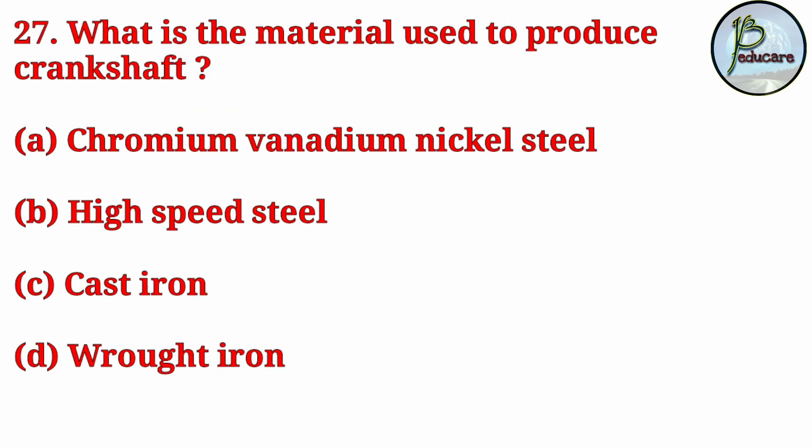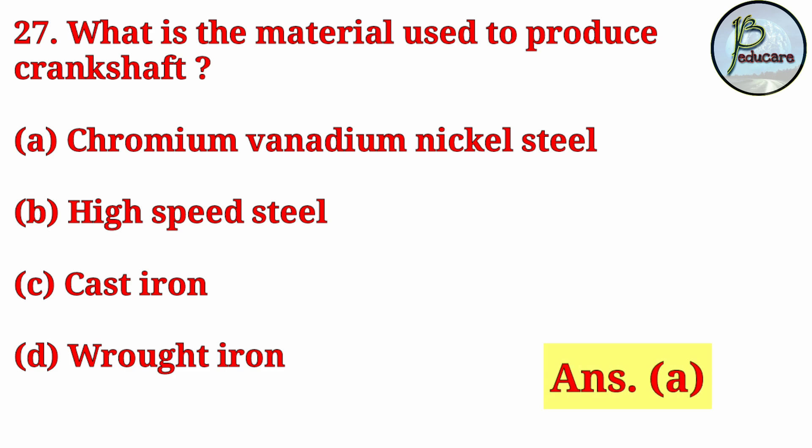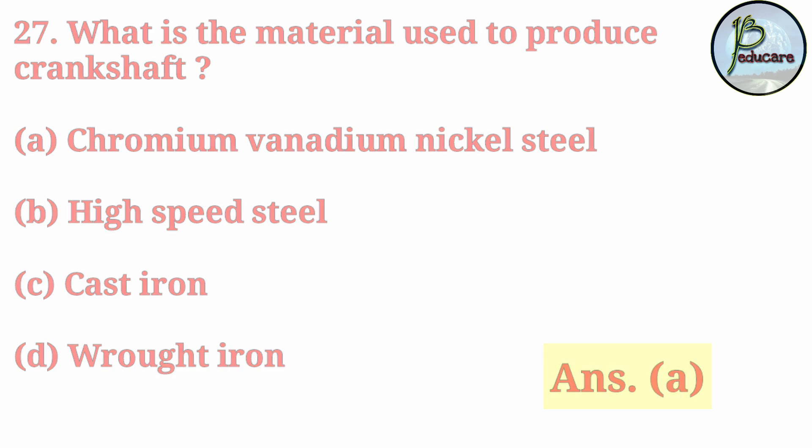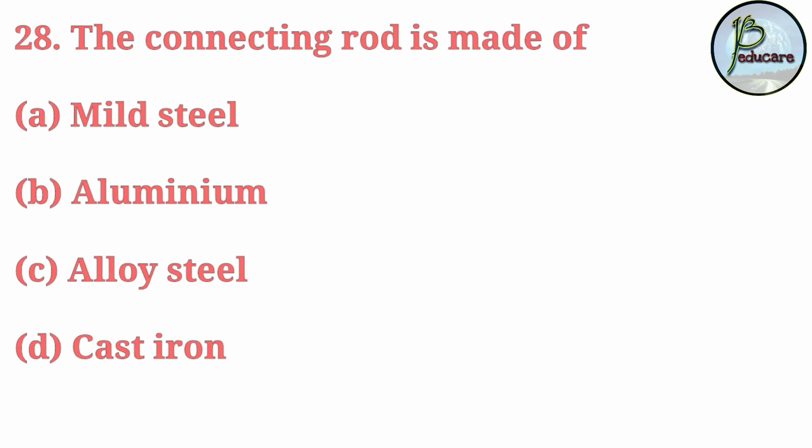What is the material used to produce the crankshaft? What material is used to make the crankshaft? The correct answer is Answer A — chromium vanadium nickel steel. The crankshaft is made of chromium vanadium nickel steel.